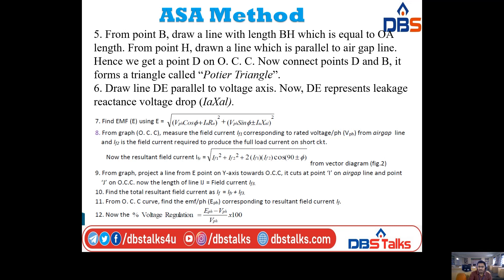The EMF formula for the ASA method is: E = √[(V·cosφ + IA·RA)² + (V·sinφ ± IA·XAL)²]. From the OCC graph, measure field current IF1 corresponding to rated voltage per phase from the air gap line. IF2 is the field current required to produce full load current on short circuit. The resultant field current is IFR = √[IF1² + IF2² + 2·IF1·IF2·cos(90° ± φ)].